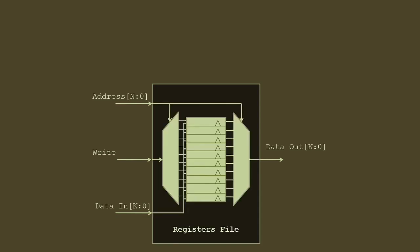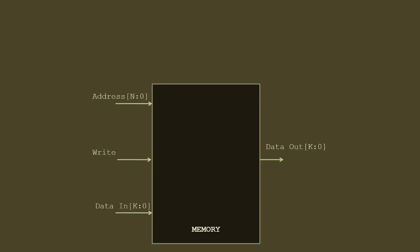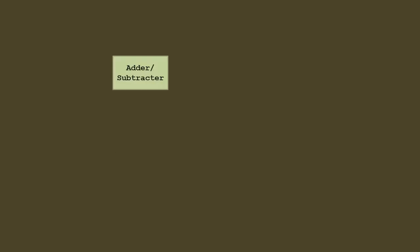Normally memory is not implemented as a register file - it's generally implemented differently. But conceptually you can think of it as a small memory. Larger memories, which we call block RAMs on FPGAs, behave similarly, with one difference: there is a one clock cycle delay in the output.